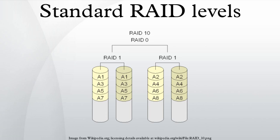According to the Storage Networking Industry Association, the definition of RAID 6 is: any form of RAID that can continue to execute read and write requests to all of a RAID array's virtual disks in the presence of any two concurrent disk failures. Several methods, including dual check data computations, orthogonal dual parity check data, and diagonal parity, have been used to implement RAID level 6.